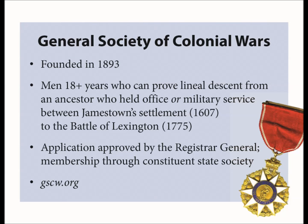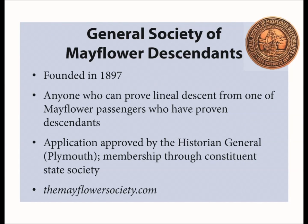The General Society of Colonial Wars was founded in 1893 for men 18 years or older who can prove lineal descent from an ancestor who held office or military service from the settlement of Jamestown in 1607 to the Battle of Lexington in 1775. Applications are approved by the Registrar General and membership is through your constituent state society. The General Society of Mayflower Descendants was founded in 1897 to preserve the memory of the pilgrims who came over on the Mayflower and the ideas established by the Mayflower Compact. They also publish historic and genealogical research relating to the pilgrims. Membership is for anyone who can prove lineal descent from one of the 26 male passengers from the Mayflower who have proven descendants. The application is approved by the Historian General in Plymouth and membership is through your constituent state society.